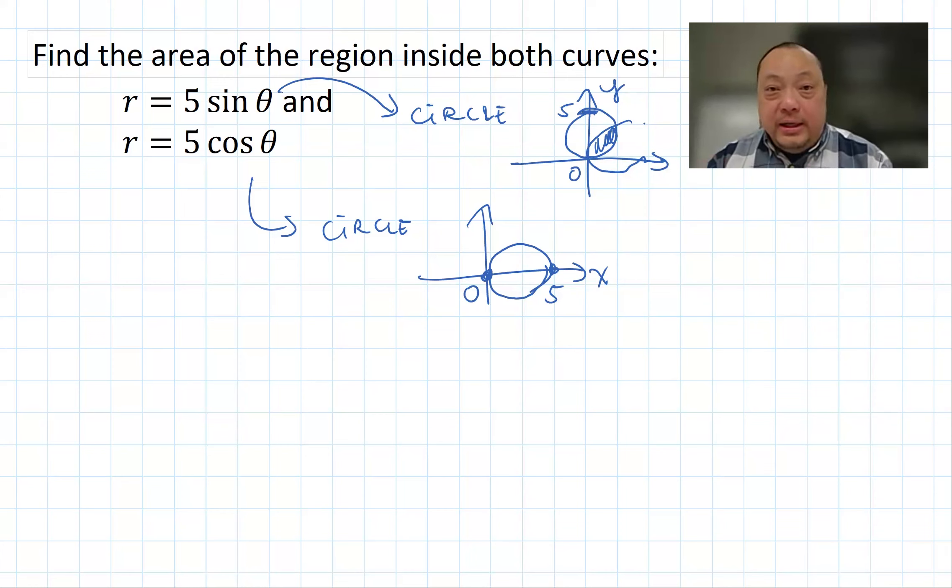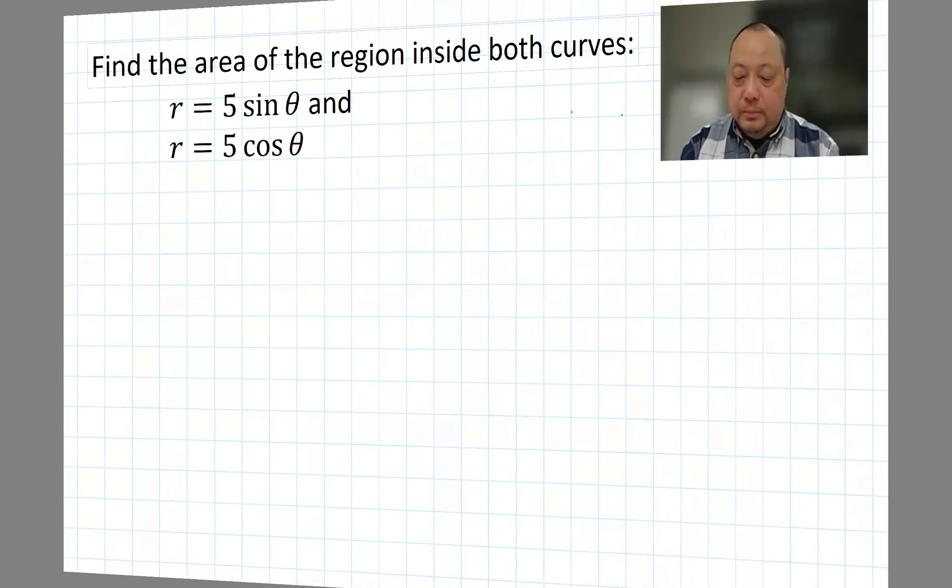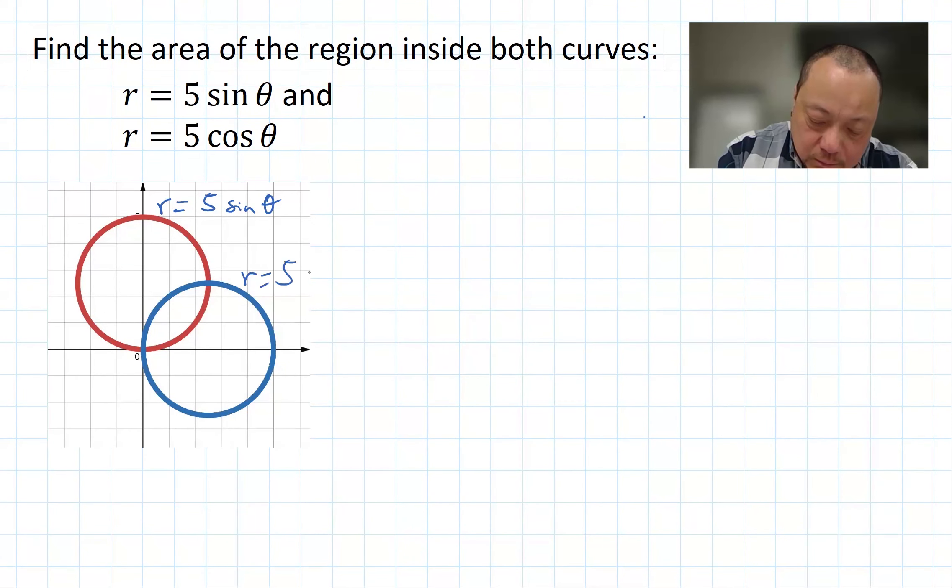Let me go get a clean copy of these two circles. So these are the two curves, and this part in between here is the area. Now, how do we calculate that area?